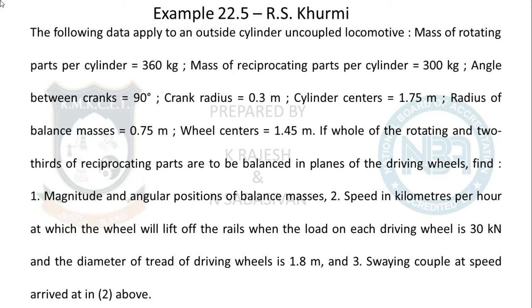Mass of the rotating parts per cylinder is 360 kg — this is M1. Mass of the reciprocating parts per cylinder is 300 kg. Angle between the cranks is 90 degrees. Crank radius is 0.3 m. Cylinder centers are 1.75 m apart — this is A. Radius of balance mass is 0.75 m (small b). Wheel centerlines are 1.45 m apart. The whole of the rotating and two-thirds of the reciprocating parts are to be balanced in the plane of the driving wheels — two-thirds is your C.